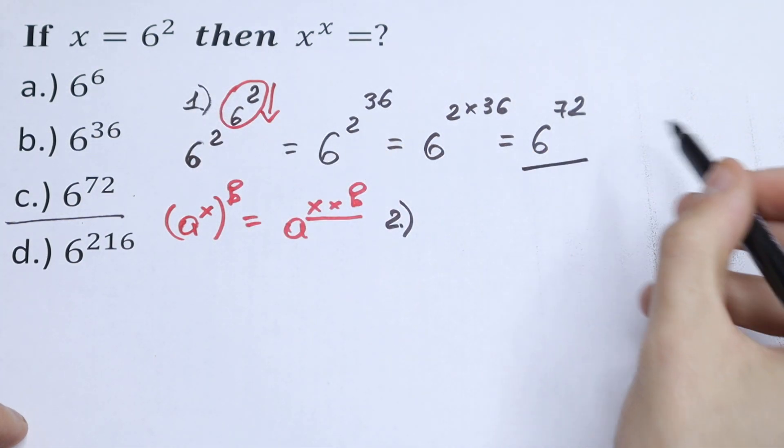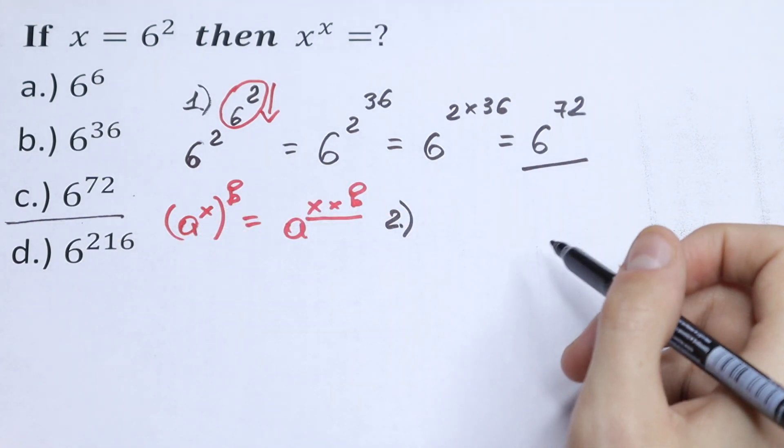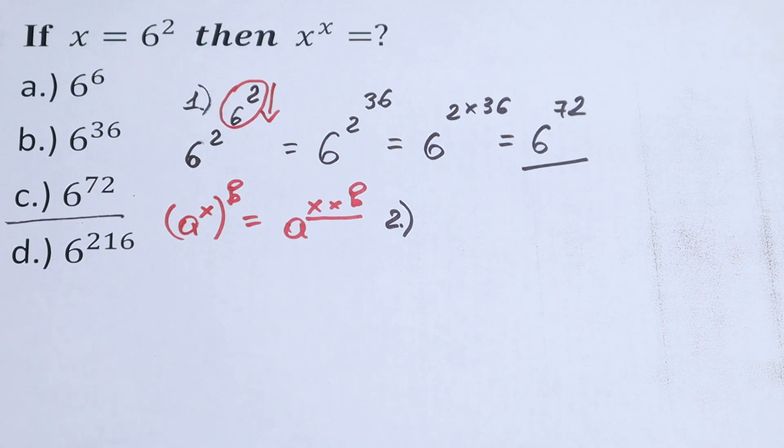And as a result, we will have 6 to the power 72, option c. If you have any question, if you have any suggestion, write a question, a comment. Thank you for watching and see you in the next videos.